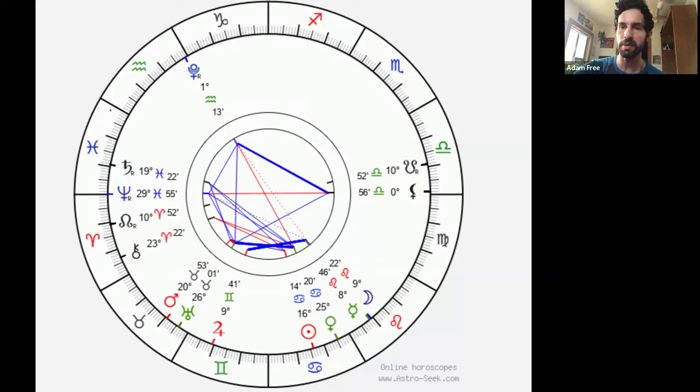So the first aspect I'm going to be talking about is this one right here that I'm circling. This planet right here is Mars, this planet is Uranus. Mars indicates our energy, Mars is the god of war. Mars indicates our ego assertion and how we go about doing things.